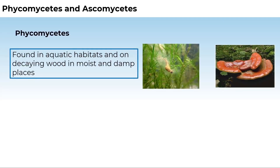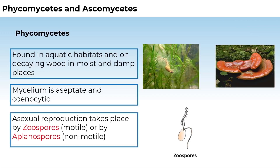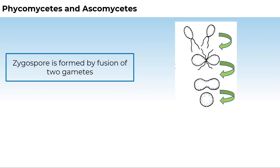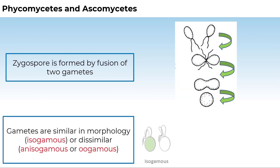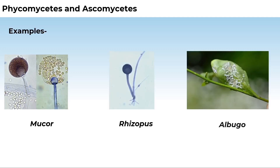Members of Phycomycetes are found in aquatic habitats and on decaying wood in moist and damp places, or as obligate parasites on plants. The mycelium is aseptate and coenocytic. Asexual reproduction takes place by zoospores (motile) or aplanospores (non-motile), produced endogenously in a sporangium. A zygospore is formed by fusion of two gametes, which may be similar (isogamous) or dissimilar (anisogamous or oogamous). Common examples are Mucor, Rhizopus (bread mold), and Albugo (parasitic fungi on mustard).